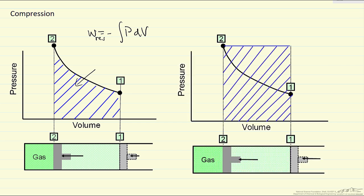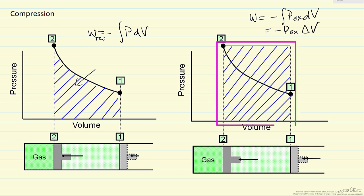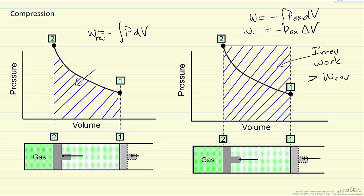For the irreversible compression process, we again use the external pressure. We need at least the final pressure P2 to compress to that value — we don't have to apply it the entire time, but we certainly need it at the end. Here we consider a constant external pressure equal to P2. Notice this area representing irreversible work is much larger than the reversible work. We have to put in more work to compress irreversibly, because we apply the same large pressure throughout the entire compression, so P_external is higher than the gas pressure until we reach the final point.